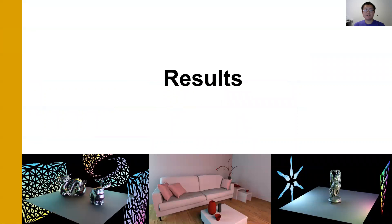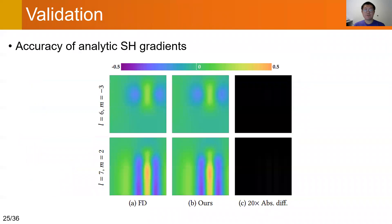This concludes our method. Now, let's see the results. We first validate the correctness of our analytic SH gradient formula. These images visualize SH gradient values within a 2D rectangular region. We compute the reference gradient by the numerical finite differences with a small step size of 0.001. Our analytic results agree with the reference values.